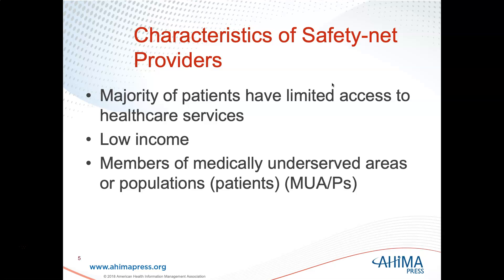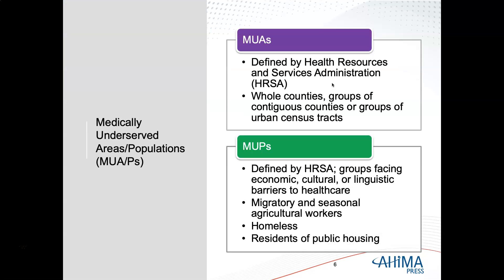The majority of these patients have limited access to health care services, are of low income, and/or are members of medically underserved areas or populations. Medically underserved areas or populations have been defined by the Health Resources and Services Administration as whole counties, groups of contiguous counties, or groups of urban census tracts. They include groups of people facing economic, cultural, or linguistic barriers to health care — often migratory and seasonal agricultural workers, the homeless, and residents of public housing.